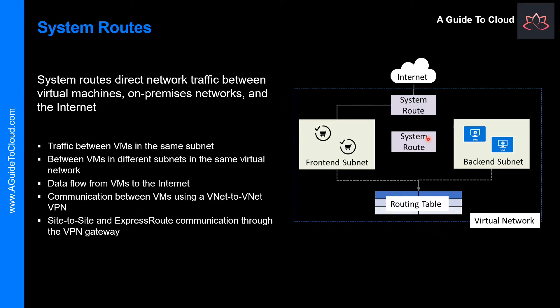Packets are matched to Routes using the destination. The destination can be an IP address, a virtual network gateway, a virtual appliance, or the Internet. If a matching Route can't be found, then the packet is dropped.